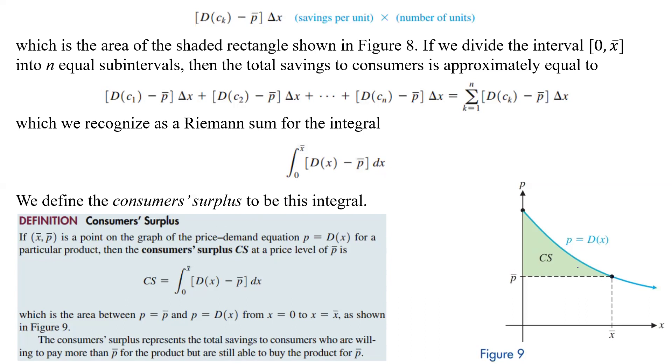And if we look at that as a picture here, we've got our D of X curve here and our P bar, our X bar, and this is going to be the consumer surplus area. So again, if we have X bar and P bar as a point on the graph of the price-demand equation where P is equal to D of X for a particular product, then the consumer surplus or the CS at a price level of P bar is given by this formula here. Basically, the integral from 0 to X bar of D of X minus P bar DX, and the area is going to be between P equals P bar and P equals DX from 0 to whatever that X bar is as shown here.